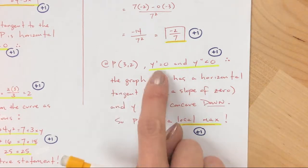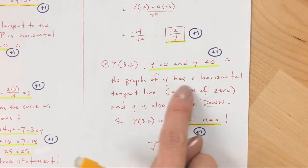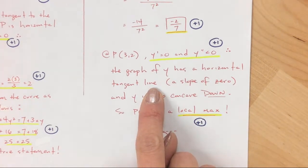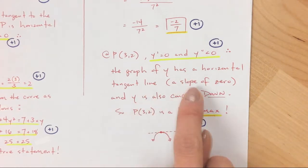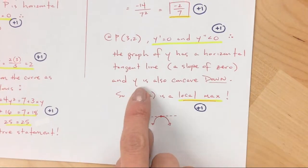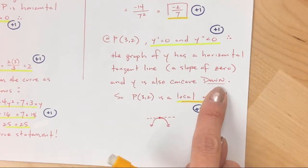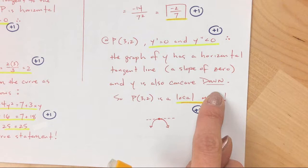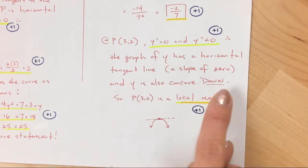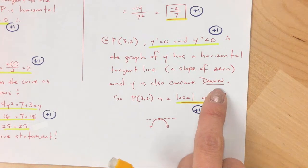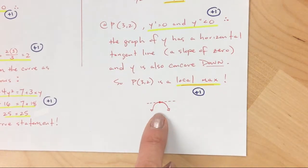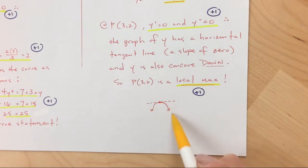Therefore, and I'm just rewriting this, the graph of y has a horizontal tangent line. I'm going to be specific. The graph of y has a horizontal tangent line, which is a slope of zero. And y is also concave down at that point. So if you have a horizontal tangent line and the curve is concave down, it's going to look something like this. I drew this just to show you. So the curve is concave down and there's a horizontal tangent line, which means that that point three comma two is a local maximum. It goes up on the left, down on the right. It must be a local max. So there's my justification.